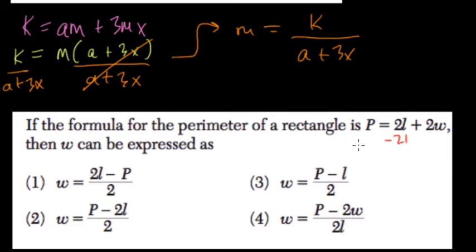Well, I would subtract 2L from both sides, get W all by itself, this cancels out. P minus 2L equals 2W.